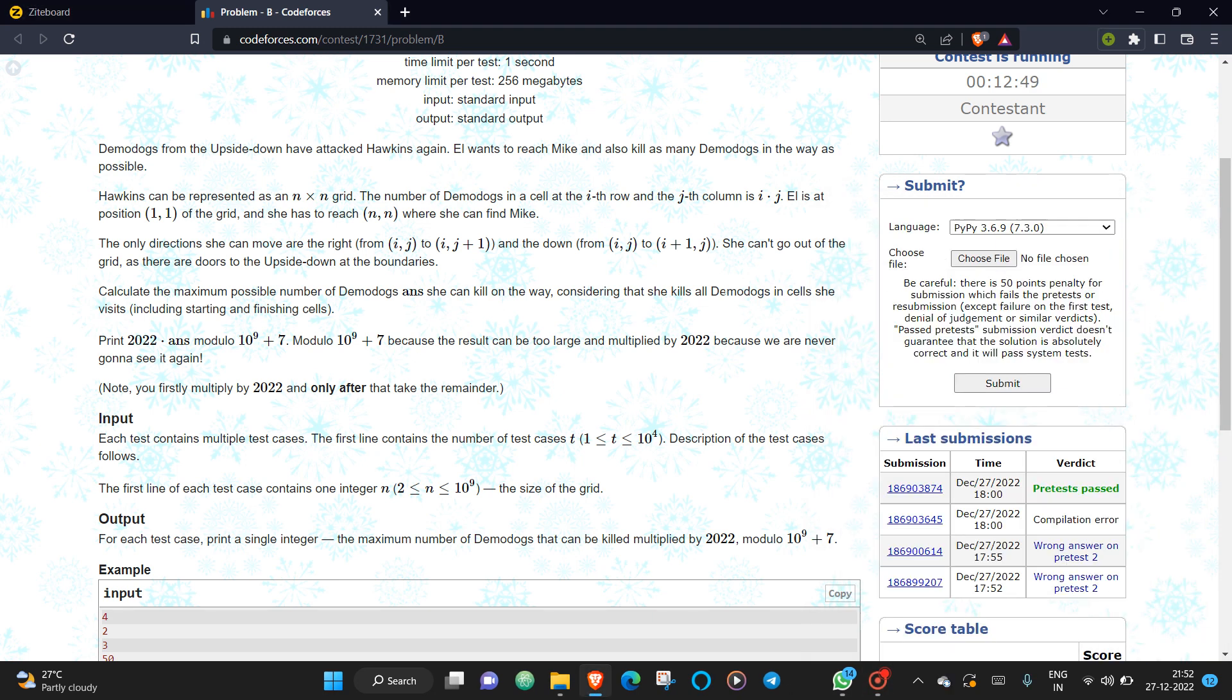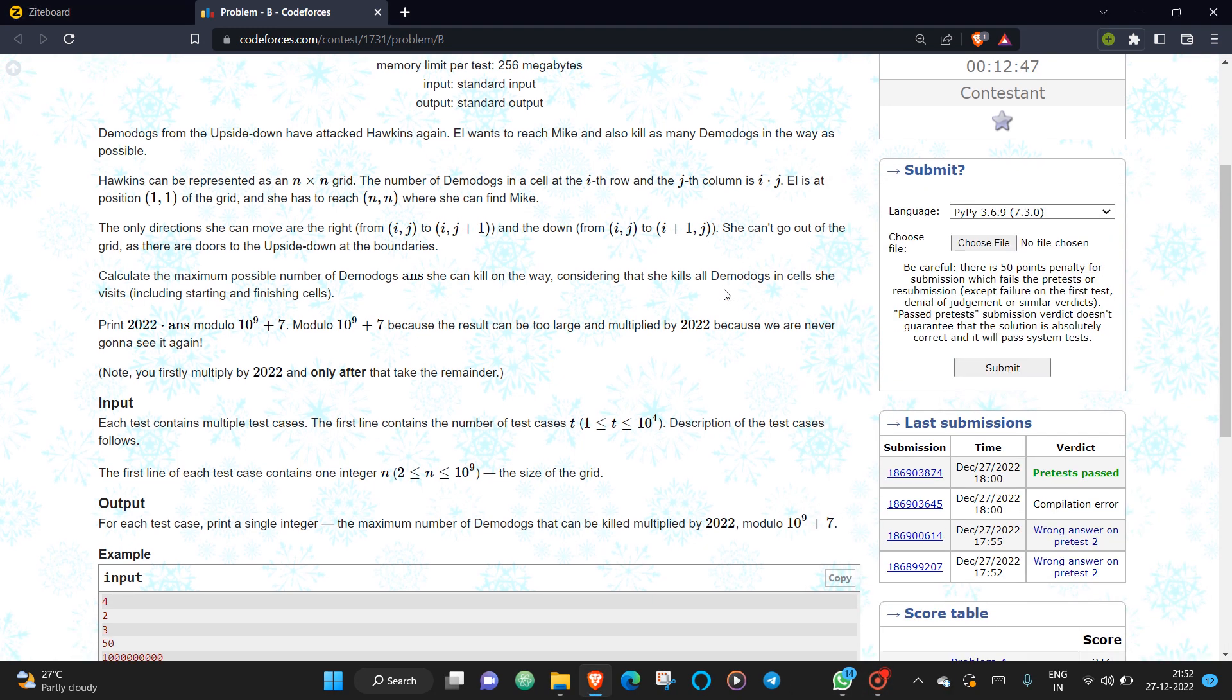This is the Codeforces Demo Docs problem. The problem statement is: you're given an n by n grid where you can move either right or down. For each square, you get points equal to i times j, and you need to maximize those points.